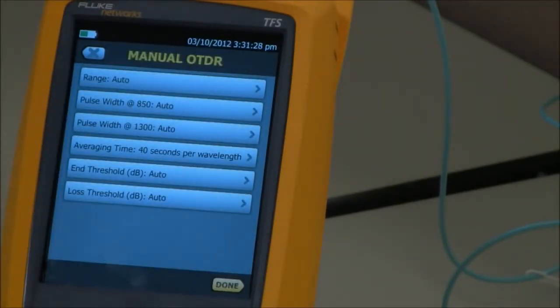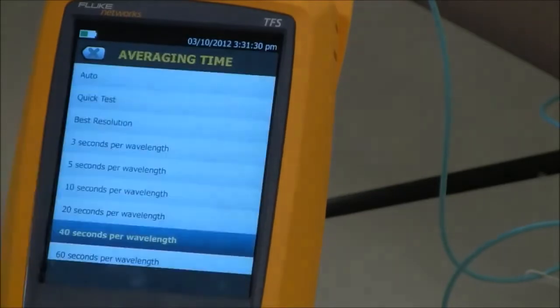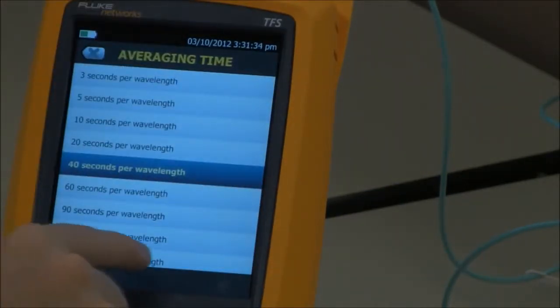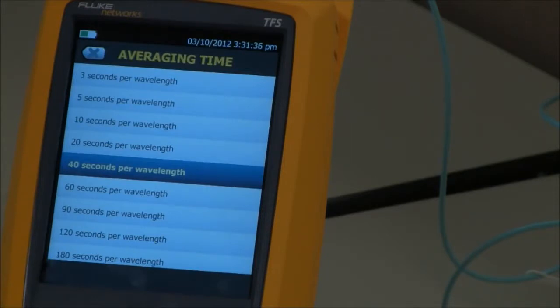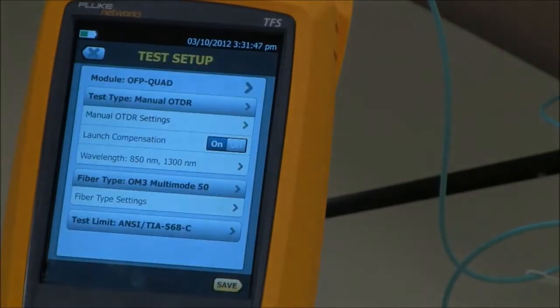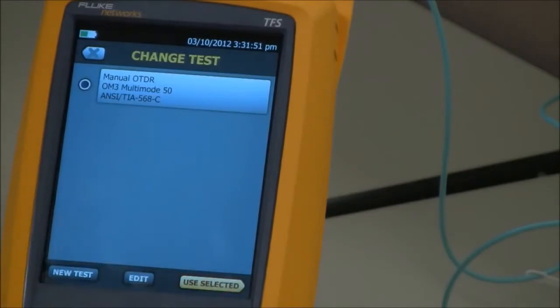My averaging time is set to 40 seconds per wavelength. I can change that and put you through the misery of watching an OTDR measurement take 180 seconds per wavelength. That's a six-minute test. I'm not even too sure I want to wait 40 seconds, so I'm going to put it to 20 seconds. Let's do Done. And Save. And we'll use that one.